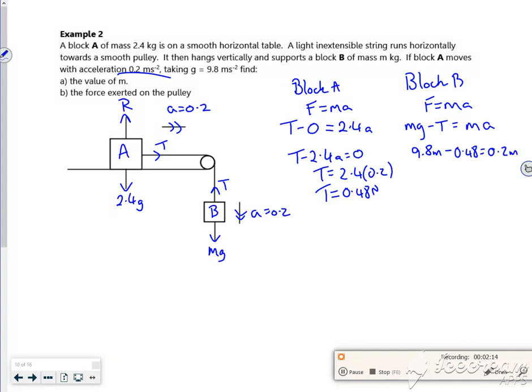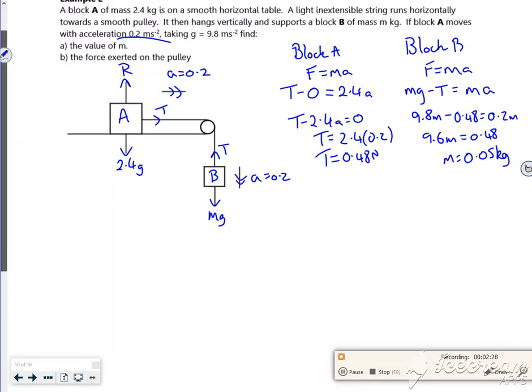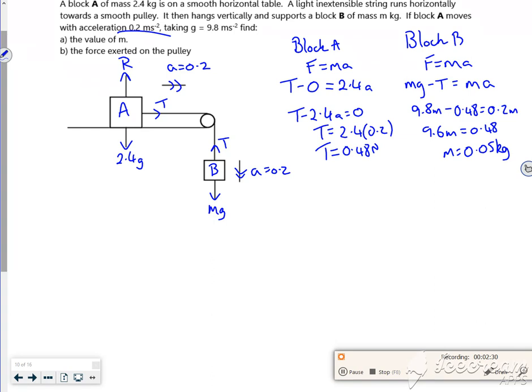So I've got 9.6M equals 0.48, so M is 0.05 kilograms. That was much easier knowing what the acceleration was. Now, I don't know why they do this - the force exerted on the pulley.